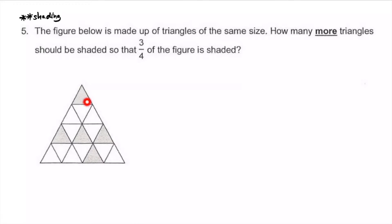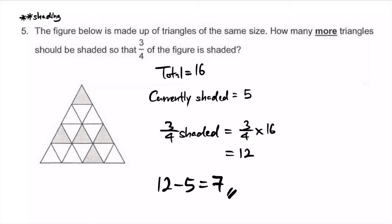Triangles here are all the same size. How many more should be shaded so that three quarters of the figure? We're interested in the total first - three quarters of 16. What's currently shaded is 5. Three quarters of 16 is 12. If currently 5 are shaded and we want 12 shaded, the number to be shaded is the difference, which is 7.